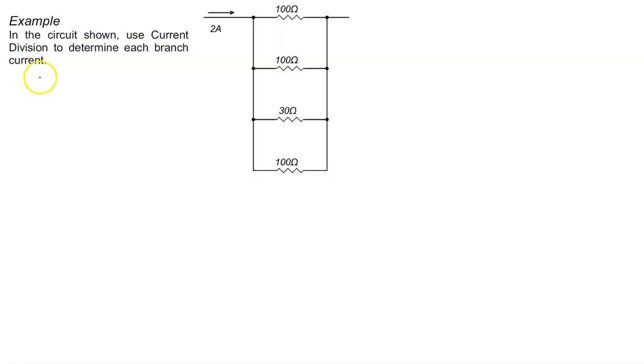We note that the current division general formula says that the current in some branch X is equal to the total equivalent resistance of our branches divided by the resistance of branch X, and multiplied by the total current entering the branches.